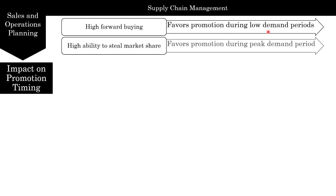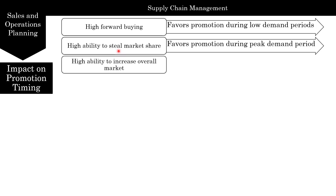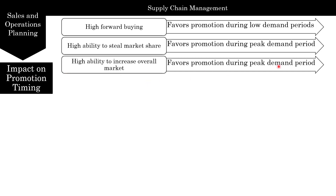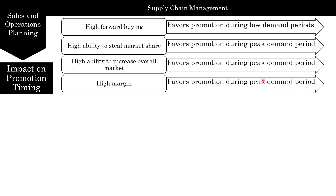If you have a high ability to steal market share, this favors promotion during peak demand periods. For example, you would offer a promotion between Thanksgiving and New Year — the peak demand period — so that people come to you instead of your competitor. High ability to grow the overall market also favors promotion during peak demand. If you have a high margin — a large difference between the cost of making the product and the selling price, like Apple products — this also favors promotion during peak demand periods, because the high margin buffers the increase in costs from storing more inventory or varying capacity.